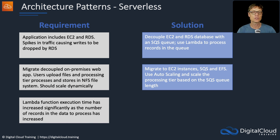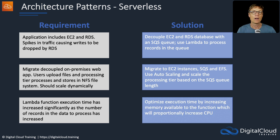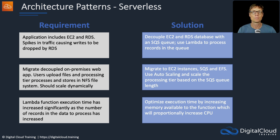A Lambda function's execution time has increased significantly as the number of records to process has increased. A method of optimizing this solution would be to increase the available memory to the Lambda function. Allocating more memory will proportionally increase the amount of CPU, which might decrease your processing time — giving you more CPU power and more memory available to each function.